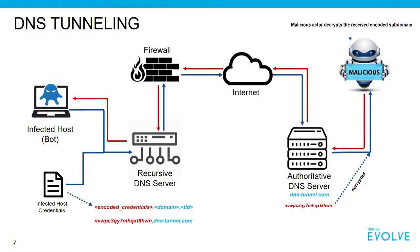Another technique is DNS tunneling — using DNS to get information from the infected host. Data is encoded in the subdomain and sent back to an authoritative DNS server owned by the malicious actor. The recursive DNS server, not finding it in cache, sends the request to that authoritative server. That server decodes the data — which might be credentials — so the attacker now has your credentials. That's another important thing to detect.